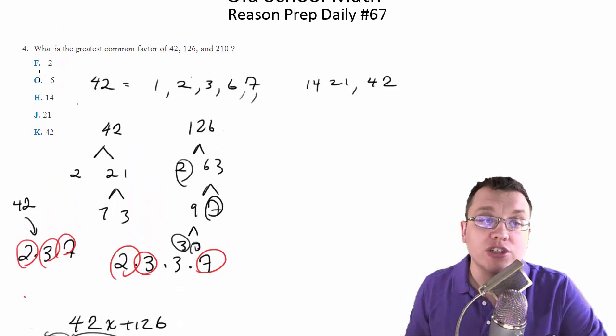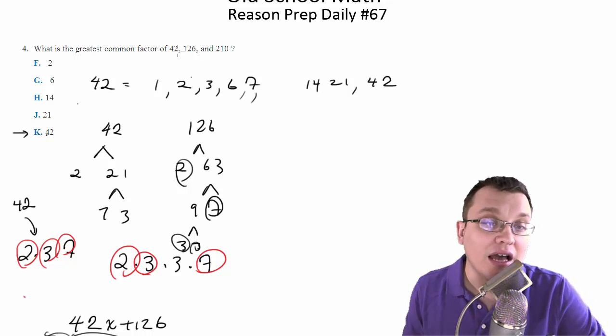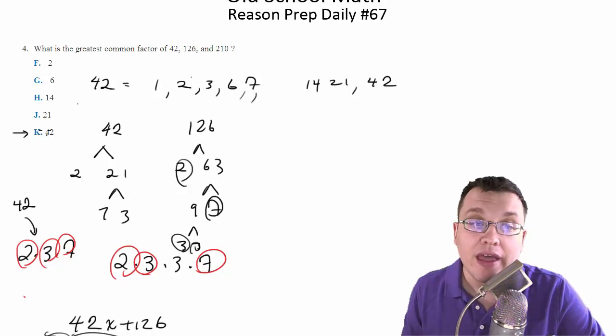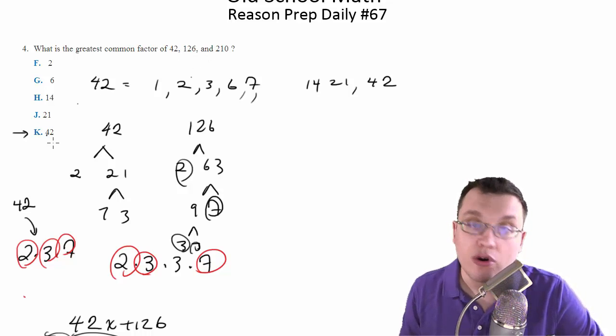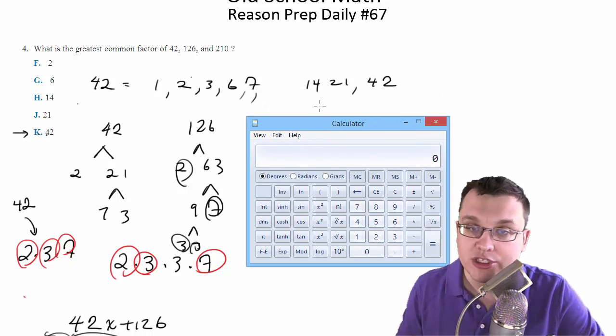But I think the best way to do this question, since it's multiple choice, is to just plug in the numbers and start with the biggest, see if this can divide into all three of them, and whichever one works first, starting from the biggest going to the smallest, will be your answer, right? So basically abuse the fact that it's a multiple-choice question.